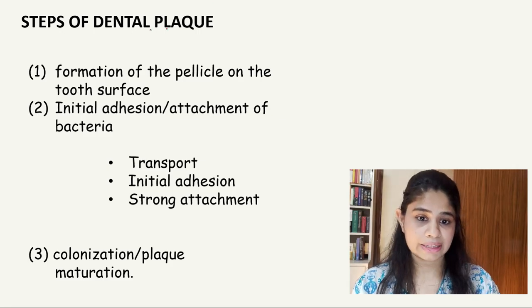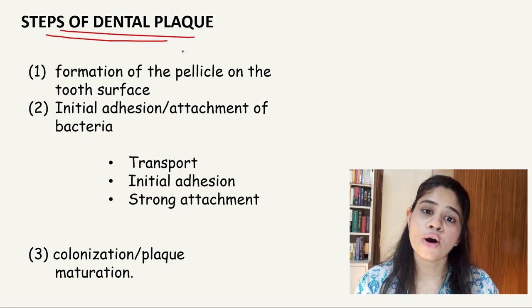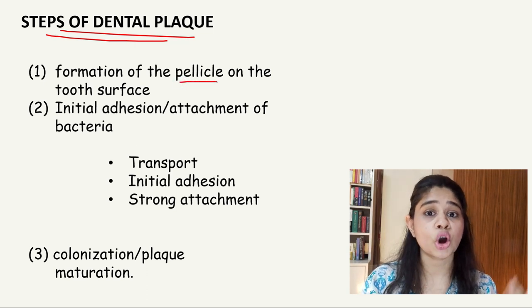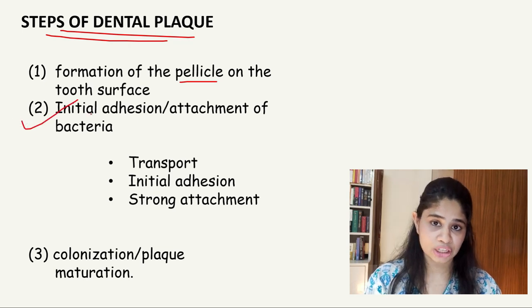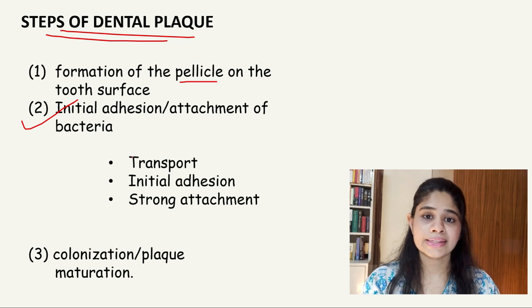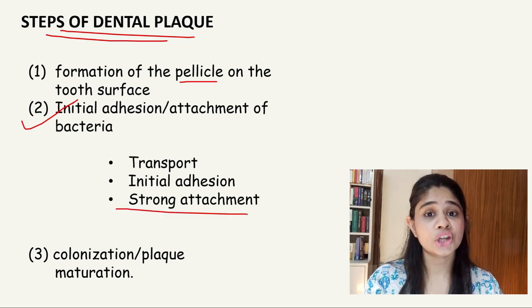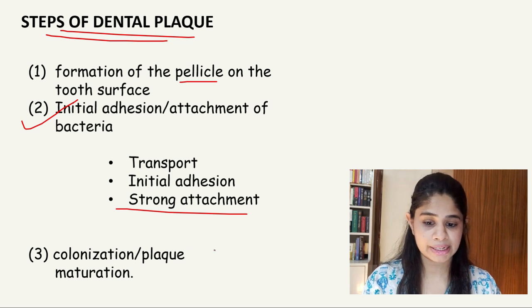To recapitulate: we spoke about the steps of dental plaque formation — formation of the acquired pellicle on a clean tooth surface, which is critical for bacterial adhesion and attachment, followed by bacterial growth and interaction with genetically distinct species to form colonization and plaque maturation. I hope this video was helpful. If it was, please hit the like button — it helps the video get discovered by other viewers. Until we meet next, take good care of yourself. This is Periohub signing off.